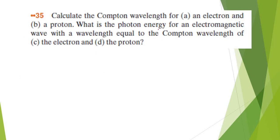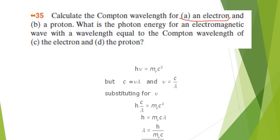Next question is about calculate the Compton wavelength for an electron and a proton. What is the photon energy for an electromagnetic wave with a wavelength equal to the Compton wavelength of the electron and the proton? Okay, this is basically like I've told before. If you don't calculate it, it always yields to the same answer. Let's see. These are the formulas. You're going to have to find this lambda.